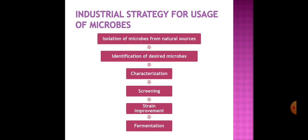The strategy for using microorganisms in industry involves several steps: first, isolate microorganisms from natural sources; identify and characterize the desirable microorganisms; screen them; improve their strains for production of more yield or products; and then use them in industries.